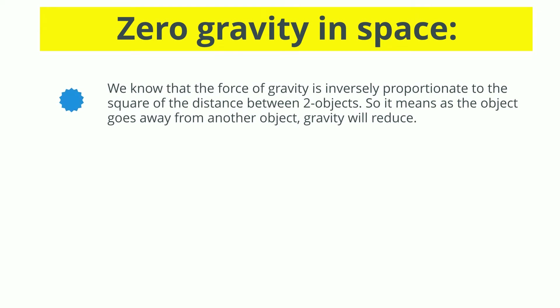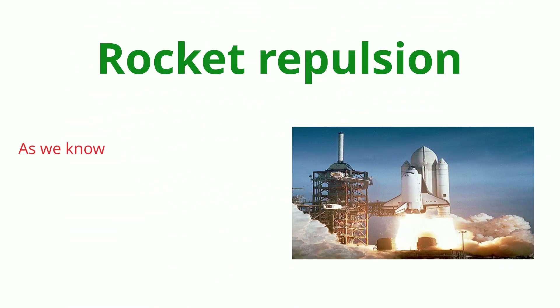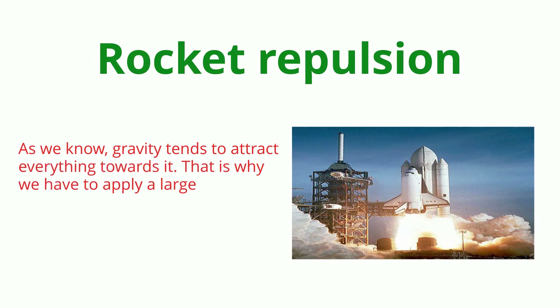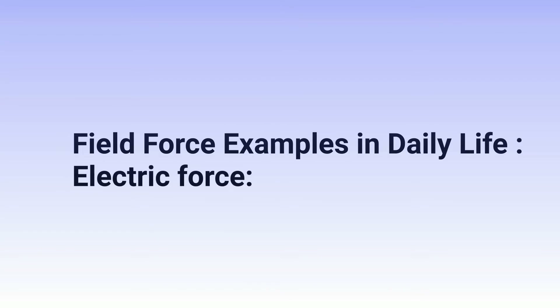Gravitational force is inversely proportionate to the square of the distance between two objects. As an object moves farther away from another object, gravity gradually reduces. In space there is effectively no force of gravity, which is why astronauts tend to float. Because gravity attracts everything towards it, a large amount of force must be applied to overcome Earth's gravitational force when propelling a rocket.